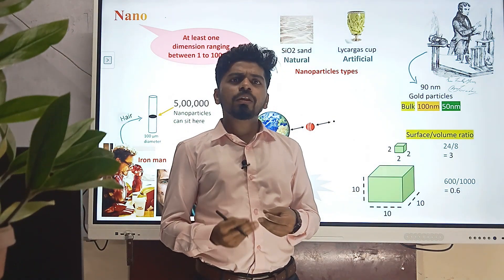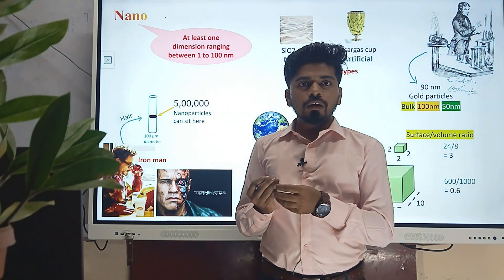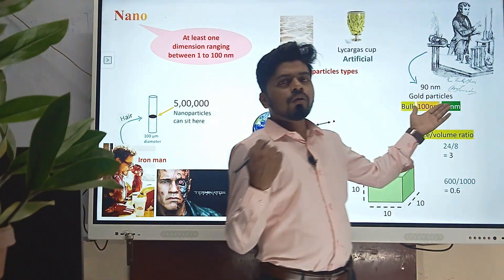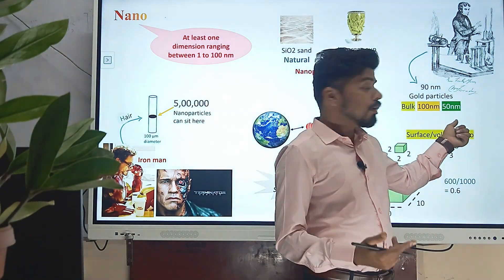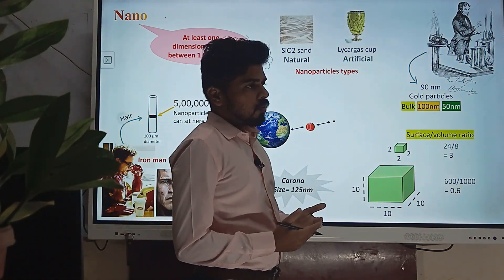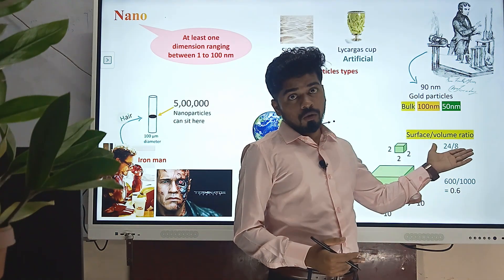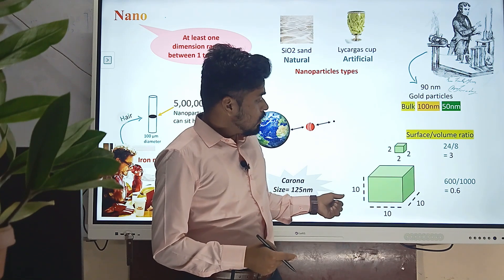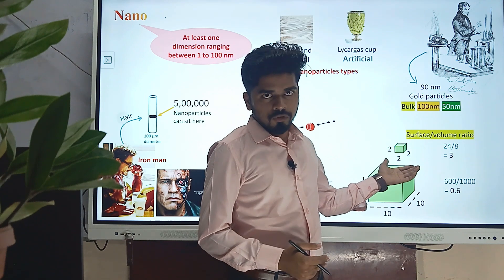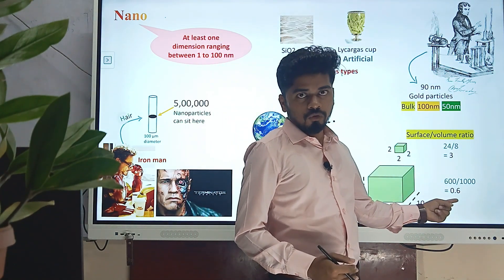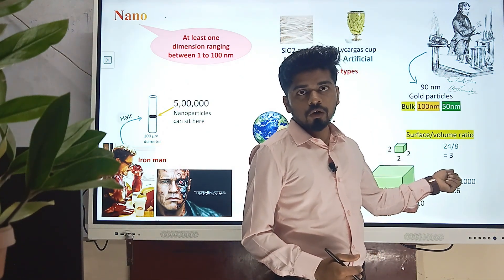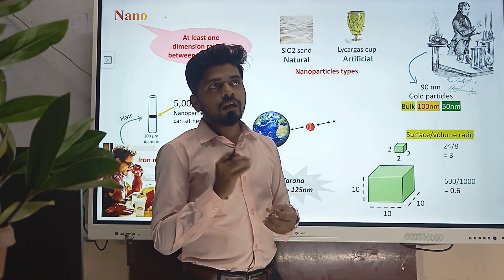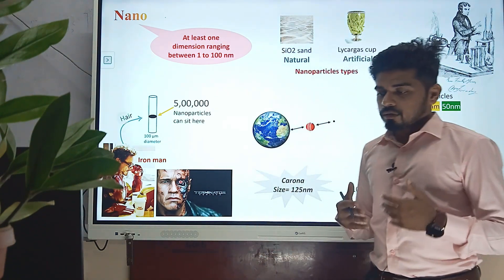Bulk gold is yellow in color. As we reduce the size to around 100 nanometers, it turns orange, and at around 50 nanometers it turns green. Everyone is fascinated by nano because nanoparticles provide a high surface-to-volume ratio. For example, a cube of 10 cm has a surface-to-volume ratio of 0.6, while a smaller cube of 2 cm has a ratio of 3. This means more atoms can participate in chemical reactions, which is the efficient use of material — that is why everyone is curious about nano.